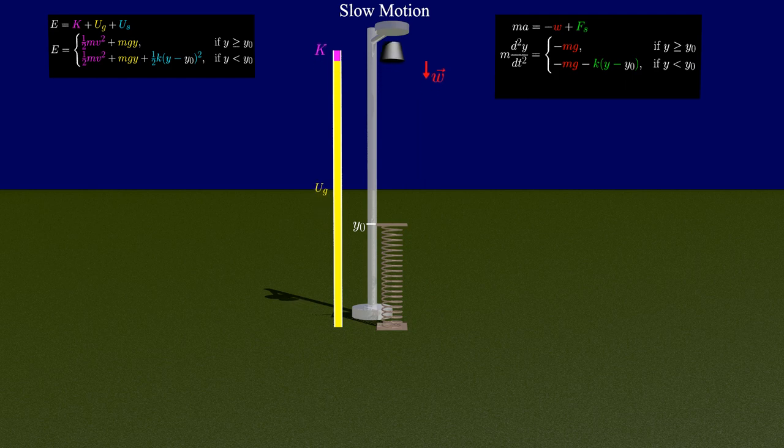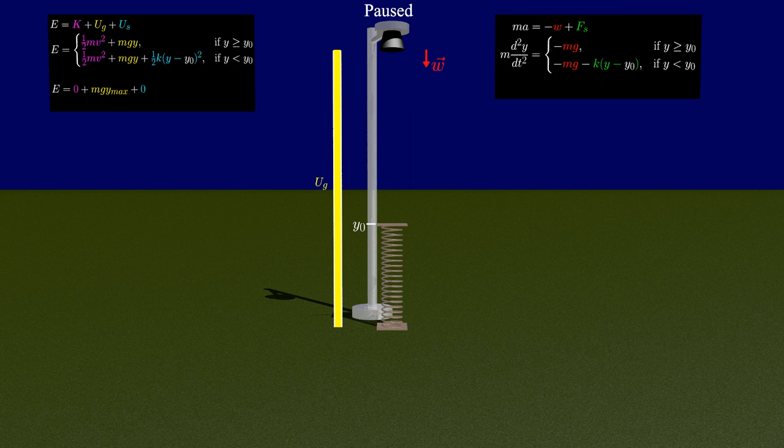Some special points of consideration are: At the top, the mass is momentarily at rest in its motion, and thus kinetic energy is zero. While the spring is completely uncompressed, which means all the energy is gravitational potential energy.